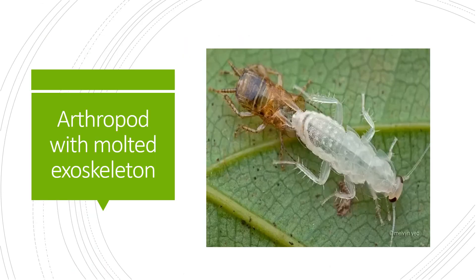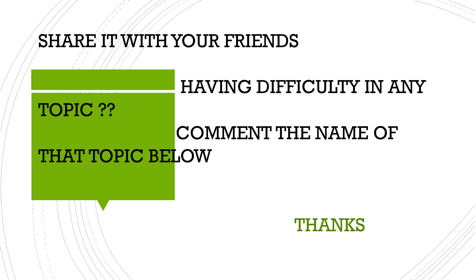In the diagram you can see an insect with a new exoskeleton alongside the shed exoskeleton — the molted exoskeleton it has removed from its body. From this diagram it should be clear what molting is and how it is carried out. I hope you have understood the complete process of molting or ecdysis. If you have any difficulty related to any other topic in biology, you can comment the name of the topic below. Thank you so much.